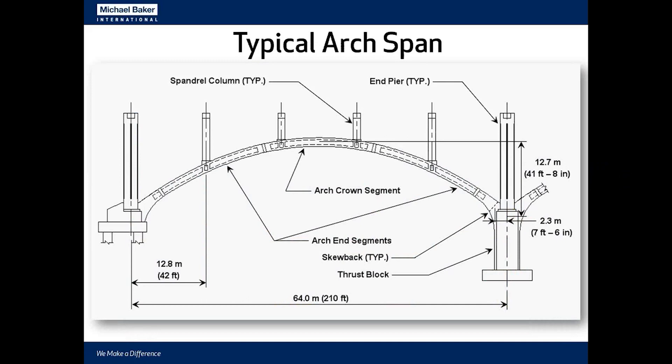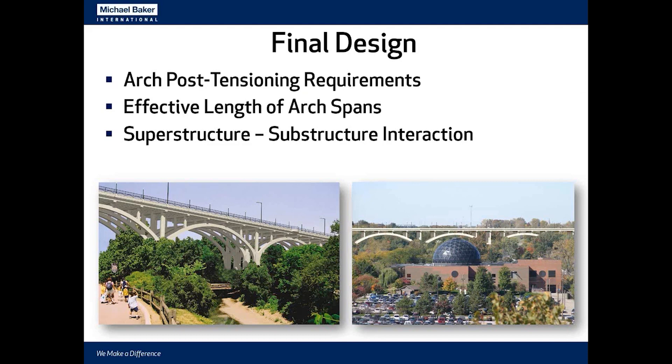Each arch span is made out of three precast segments — two arch end segments and one arch crown segment — joined together with cast-in-place closure pours between the end segments and the end piers, and between the end segments and the crown segment. The precast segments have little pedestals where the cast-in-place spandrel columns are cast on top. Each arch span is 210 feet.